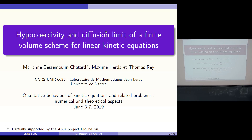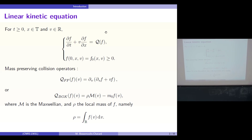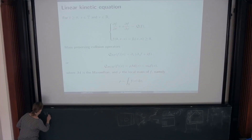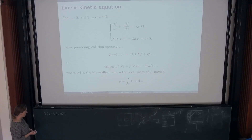During all this talk, I will focus on this linear kinetic equation. It describes the evolution of the distribution function of particles f, which depends on the time t, the position x — which is in the 1D torus — and the velocity v, which is in R. We write the equation with the time derivative, the free-transport term, and the collision operator Q, which describes interaction between particles.